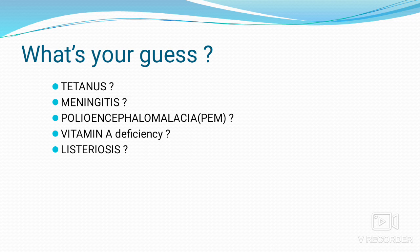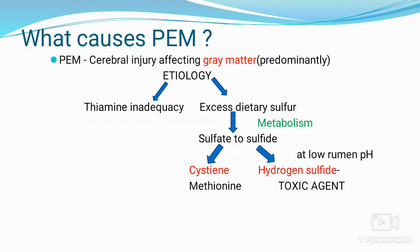PEM is a description of cerebral injury affecting predominantly the gray matter. There are two important etiologies: thiamine inadequacy and sulfur toxicity. Elemental sulfur in the rumen is metabolized via two pathways: sulfate is reduced to sulfide by rumen microbes, and the sulfide is either incorporated into sulfur-containing compounds like cysteine and methionine, or combines with H⁺ ions in the rumen to form hydrogen sulfide, which is a toxic agent.